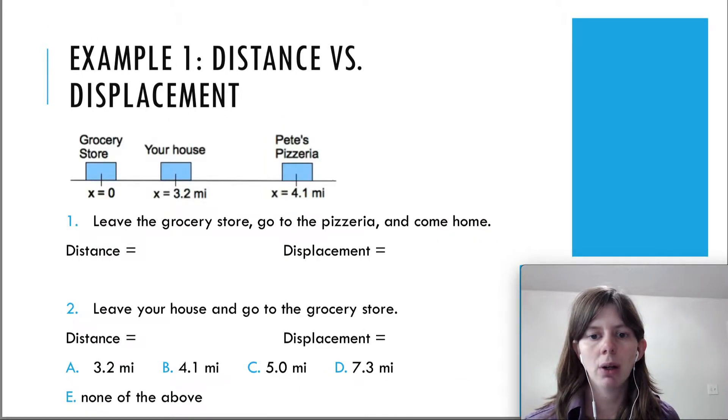So let's take a look at this final example here to see if we understand the difference between distance and displacement. There's a picture here of a grocery store, your house, and Pete's pizzeria. And the positions are given here.